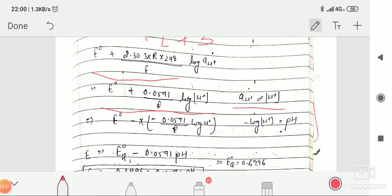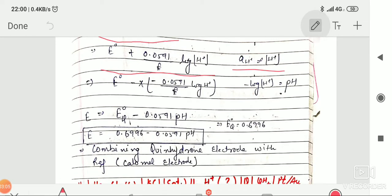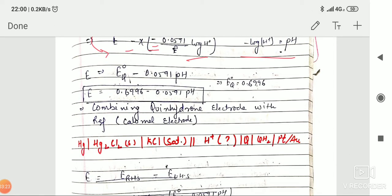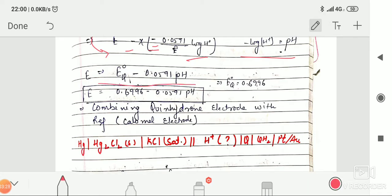As activity can also be written as H+ concentration in certain conditions, this can be modified. E naught minus, multiplied by minus because this minus minus finally becomes plus, 0.0591 log H+ concentration. Minus log H+ concentration equals pH, so this equation becomes E equals E naught plus Q minus 0.0591 pH.